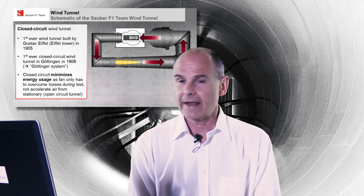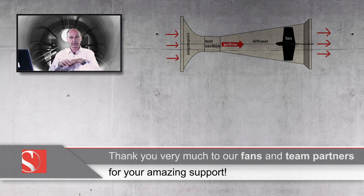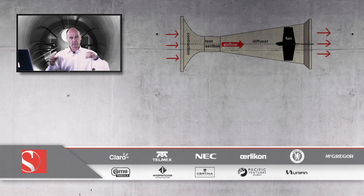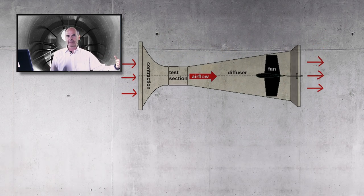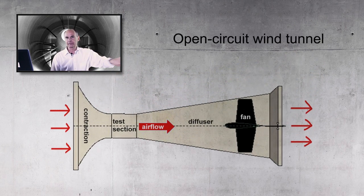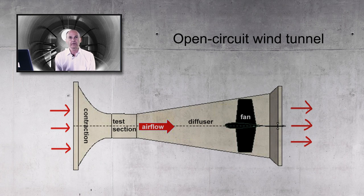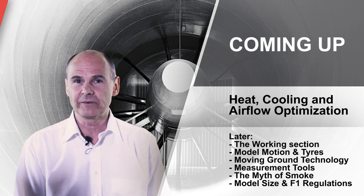The design of wind tunnels can vary quite a lot. For example, you could use a bell mouth — a trumpet — to allow air to come into a working section, then have a working section, a diffuser, and then some fans. You can put that whole package into a building and allow the air to find its own way back around and through the working section again. It's a system that's low cost to build, but no Formula One team uses a facility like that, basically because it's quite expensive to run — cheap to build but expensive to run.